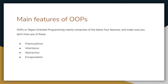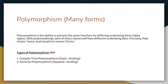The main features of OOP are polymorphism, inheritance, abstraction, and encapsulation. Polymorphism means many forms — it is the ability to present the same interface with different underlying forms. 'Poly' means many and 'morphism' means forms. It is like the same method name with different entities. There are two types: compile-time polymorphism, also called static binding, and runtime polymorphism, also called dynamic binding.